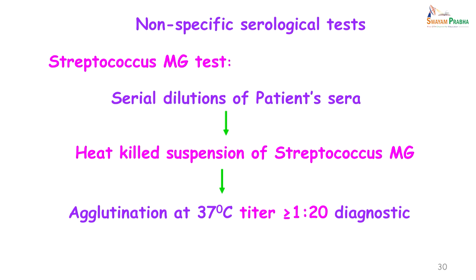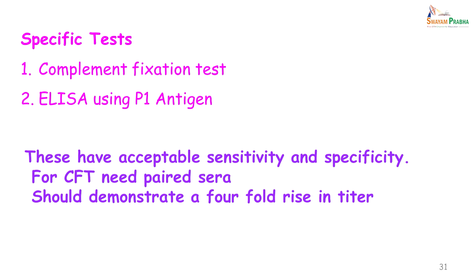The Streptococcus MG test is similar — patient serum to which Streptococcus MG is added; agglutination occurs at 37 degrees Celsius and titers of 1 in 20 or greater are diagnostic. Again, the sensitivity and specificity of this test is very poor. In the specific tests, we have the complement fixation test and the ELISA using the P1 antigen, which are nowadays used and have an acceptable sensitivity and specificity.